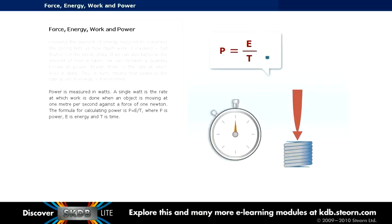Power is measured in watts. A single watt is the rate at which work is done when an object is moving at 1 meter per second against a force of 1 newton. The formula for calculating power is P equals E over T, where P is power, E is energy and T is time.